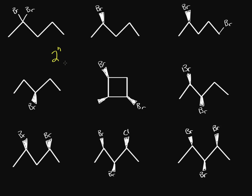Every time you have a meso structure, you have to subtract this total number by one. A meso structure is when you have an internal line of symmetry — somewhere in the molecule you can cut it in half and both sides are exactly the same. So we have to be careful for meso structures. Let's start figuring out how many stereoisomers we have.